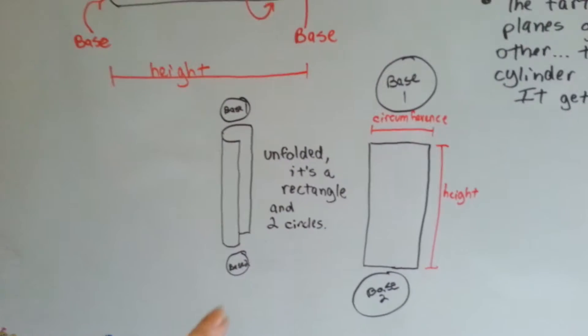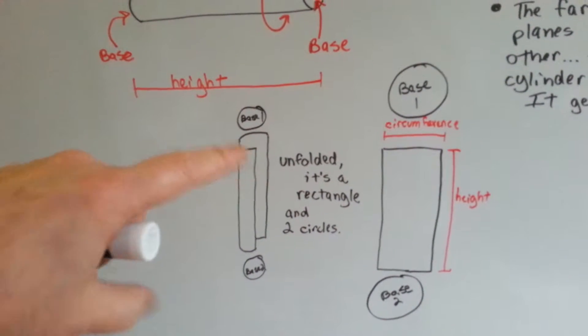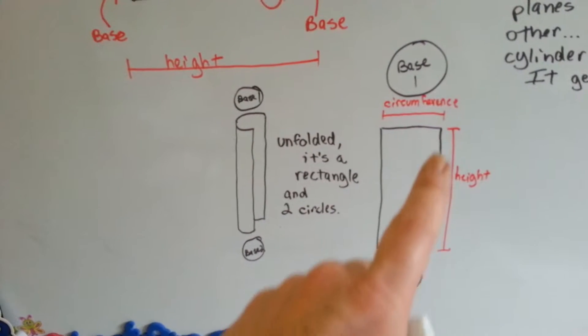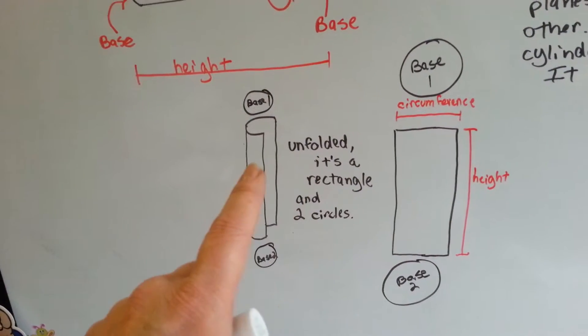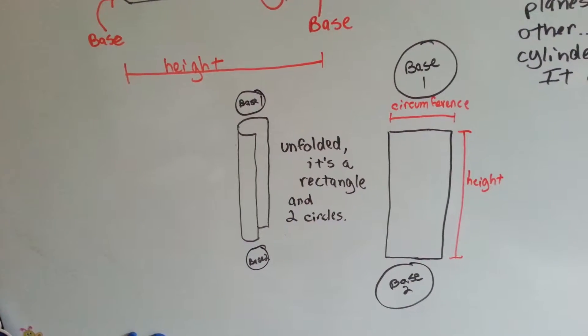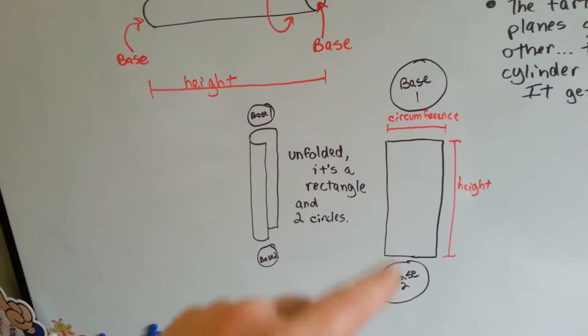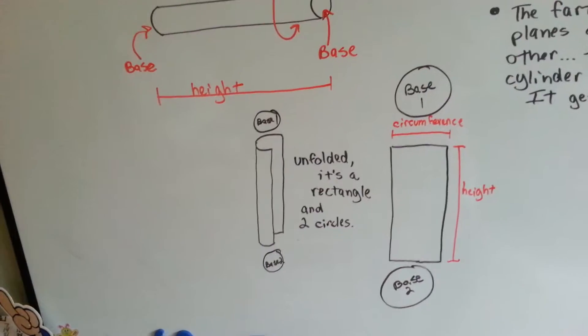So if we were to unfold the cylinder, it would open up like this. We'd see the two circles as the bases, and it would end up just being a big rectangle. See? So now, if you wanted to find the area of that, you would know you'd need to find the area of the two circles in that rectangle, right?